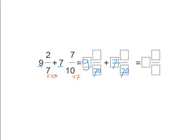But since we multiplied these on the bottom, we must multiply them at the top as well. So 2 times 10 equals 20, and 7 times 7 equals 49.